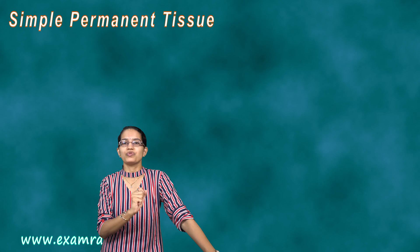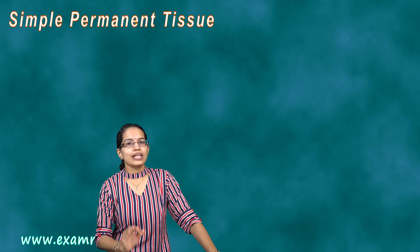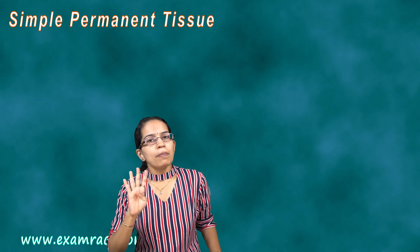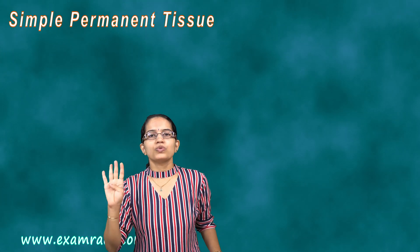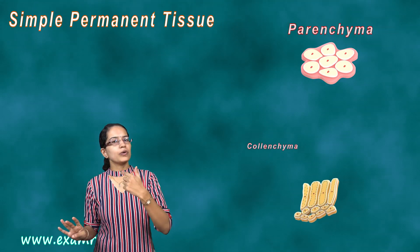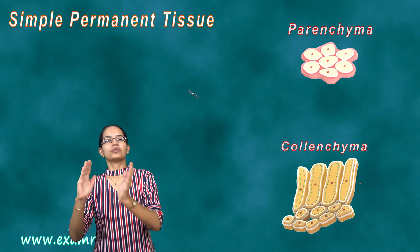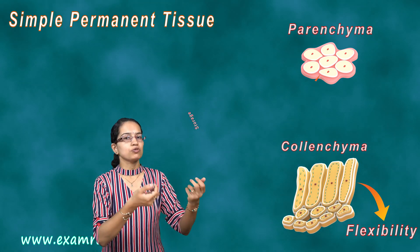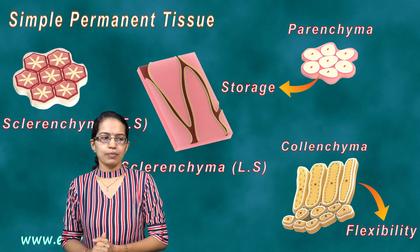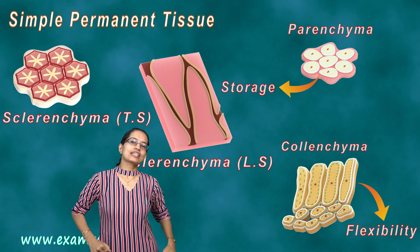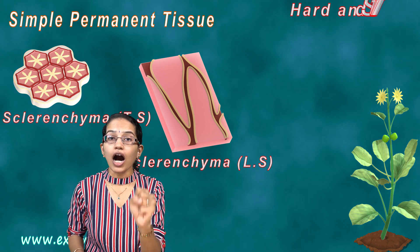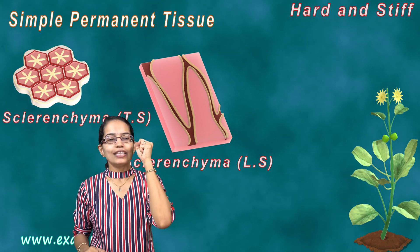These are irregularly thickened with very small intercellular spaces. The next is very, very important — it is known as scurlenchyma. As I said, simple permanent tissue has three that are very important: parenchyma, which works with storage; colenchyma, which provides flexibility; and the last one is scurlenchyma. The function of scurlenchyma is to make the plant hard and stiff.